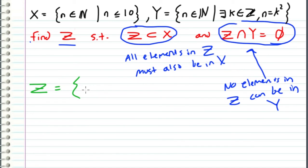And that can be the set of any numbers that is not a square where n is also greater than or equal to 0 and less than or equal to 10. So let me write this out: n in the natural numbers such that there does not exist an integer k where n equals k squared, and 0 is less than or equal to n which is less than or equal to 10. So Z can be any set that contains elements that satisfy these criteria I just spelled out.